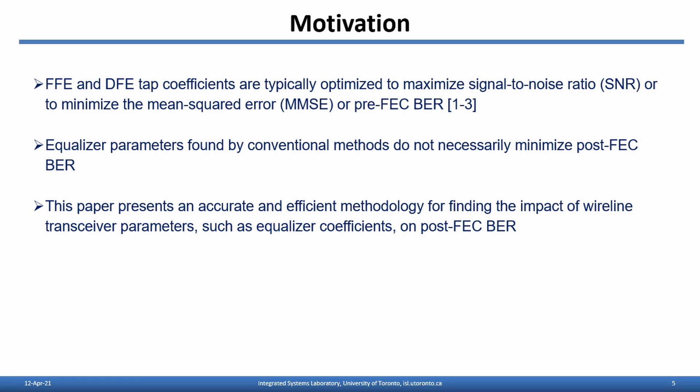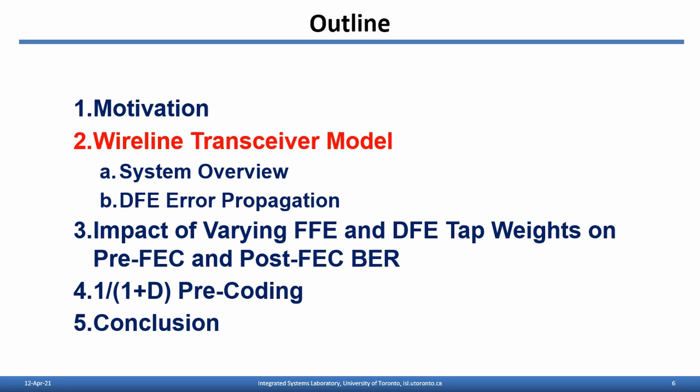FFE and DFE tap coefficients are typically optimized to maximize signal-to-noise ratio or to minimize mean square error or pre-FEC bit error rate. Equalizer parameters found by conventional methods do not necessarily minimize post-FEC bit error rate. This paper presents an accurate and efficient methodology for finding the impact of wireline transceiver parameters such as equalizer coefficients based on post-FEC bit error rate. Next, we will discuss our wireline transceiver model.